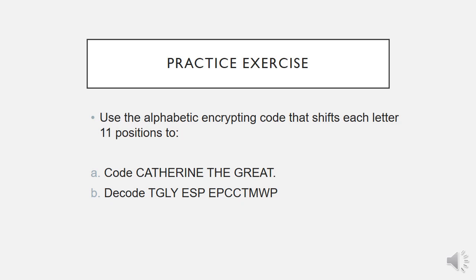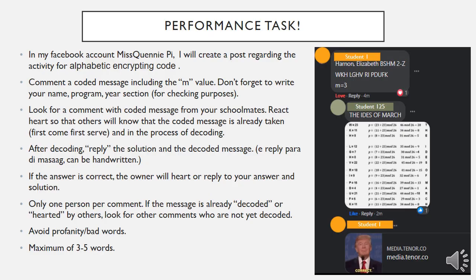Now for the practice exercises. Kindly answer this one, and at the end of this lesson there is a solution. You can check your work if you get the skill in coding and decoding the message. This is now our performance task. In my Facebook account, I will create a post regarding the activity for alphabetic encrypting code. Then you are going to comment a coded message including the position for checking purposes. Don't forget to write your name, program year, and section.